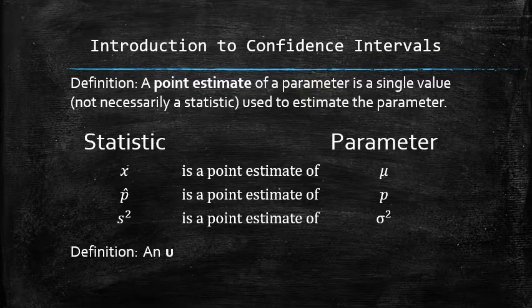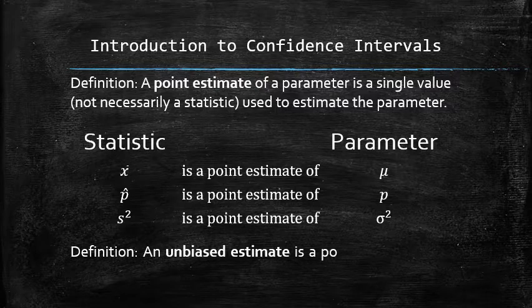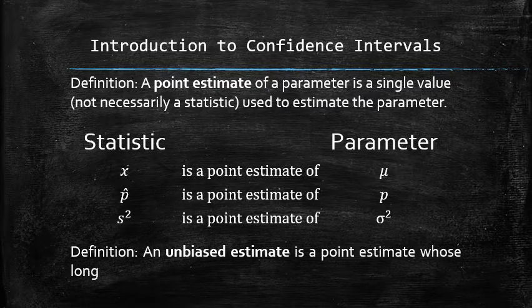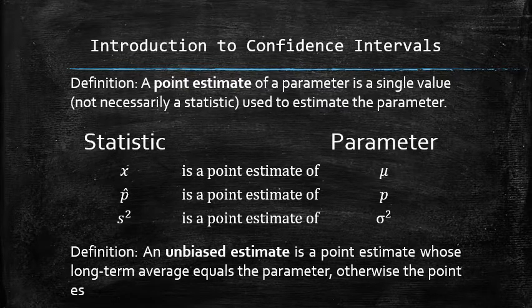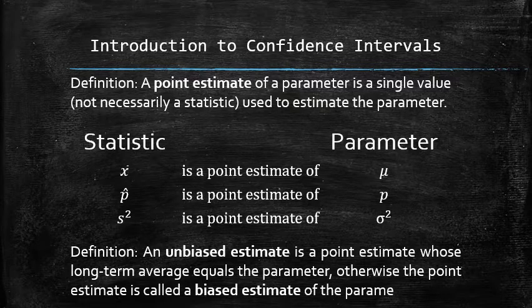We define an unbiased estimate as a point estimate whose long-term average equals the parameter. Otherwise, the point estimate is called a biased estimate of the parameter. So all the sample statistics in the table above are unbiased point estimates of their corresponding parameters.